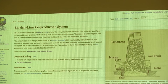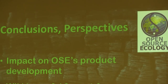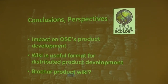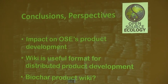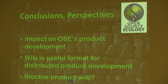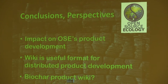In conclusion, the biochar pages seem to have influenced product development at OSE to some extent — for example, the idea of charcoal as fuel. Wiki is a very useful format for distributed product development, where multiple people in different places around the world are working on the same project. Wiki is a good format for documentation. One of the goals of this talk is to start the conversation on whether a product-focused wiki would be useful for the biochar community.